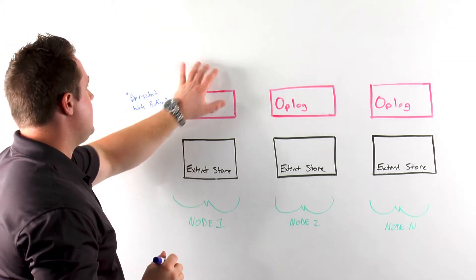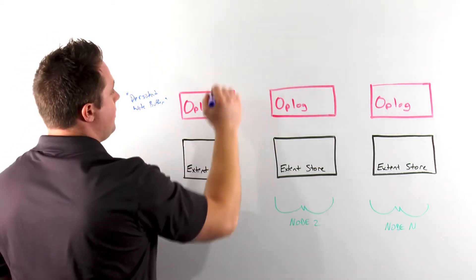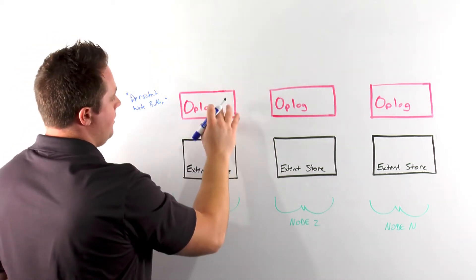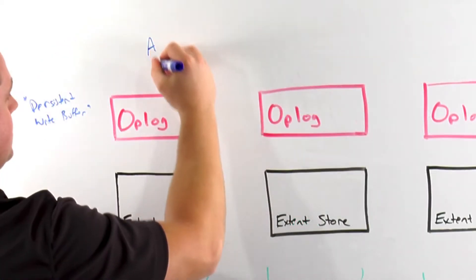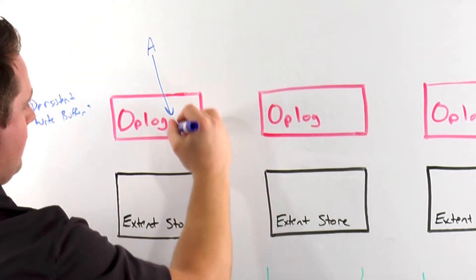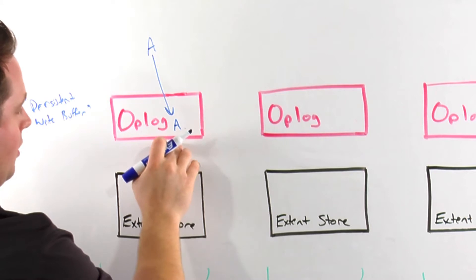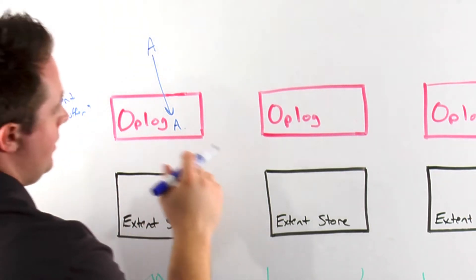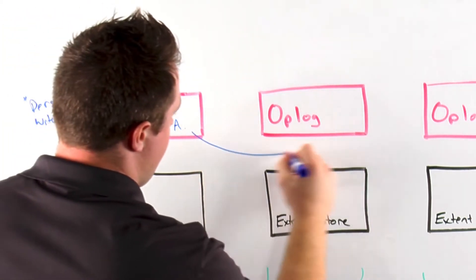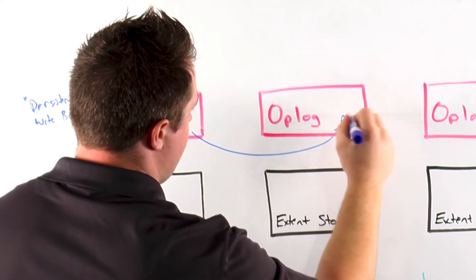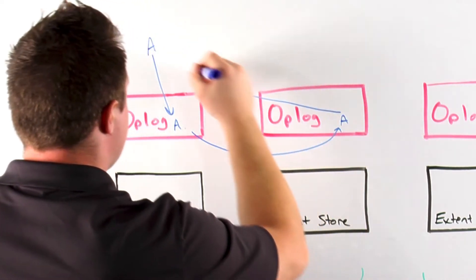When a new incoming write comes in, it's going to be facilitated by the local node's CVM and thus the local op-log. So in this example, say I write piece of data A, that's going to be stored on the local op-log. From there, we synchronously replicate that to another node's op-log within the cluster before we acknowledge the write.